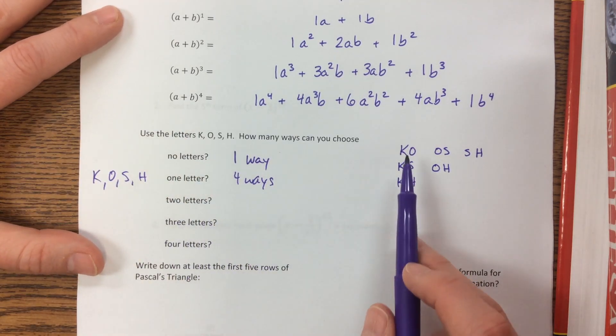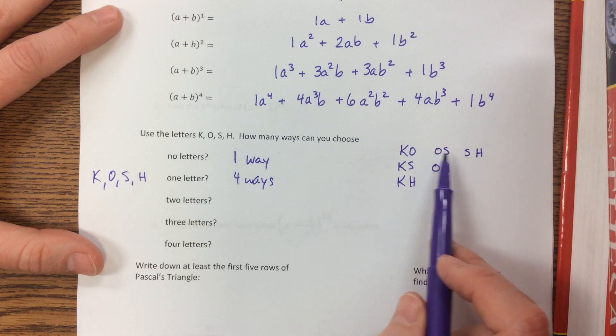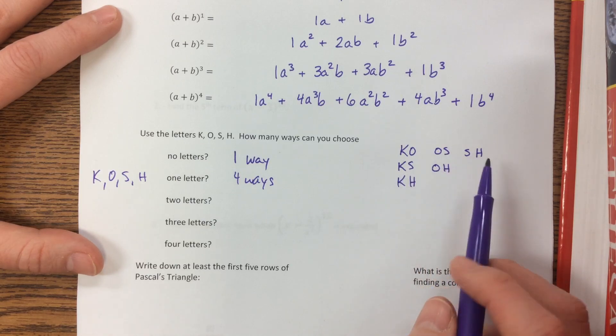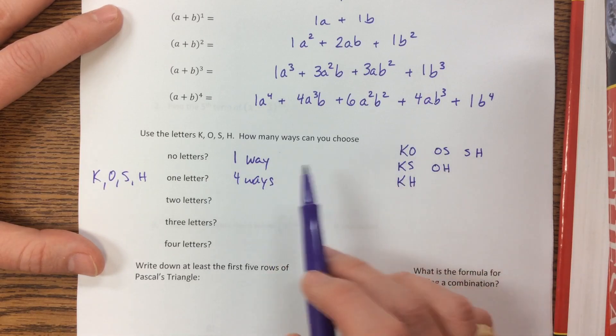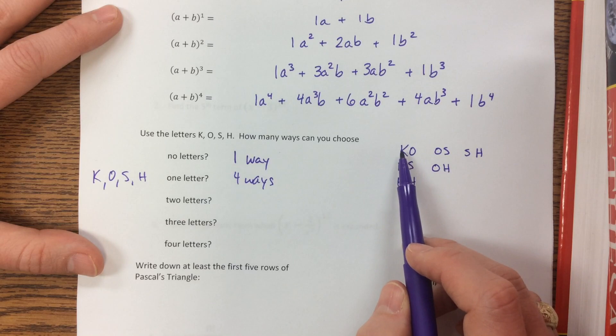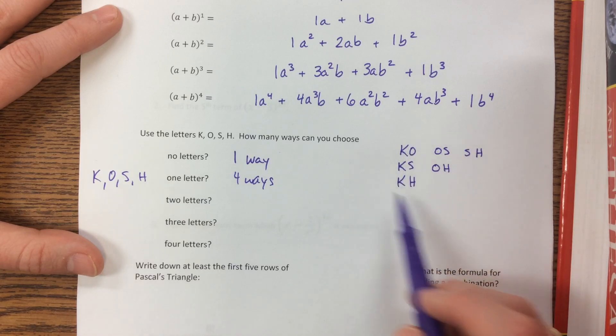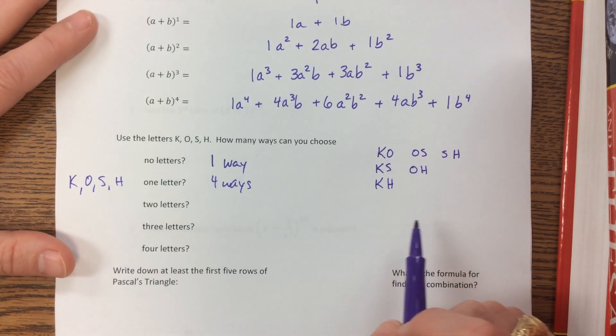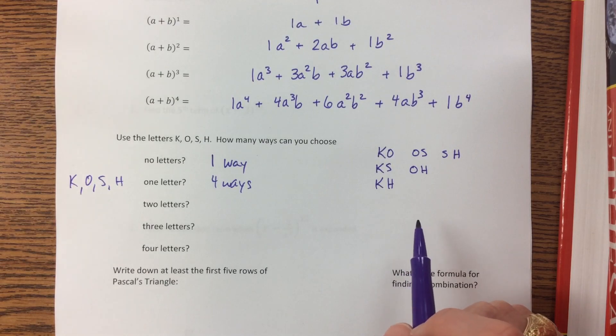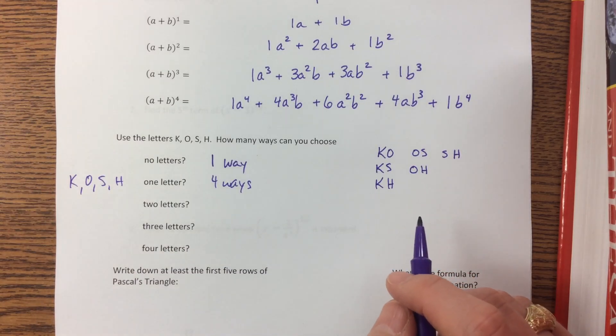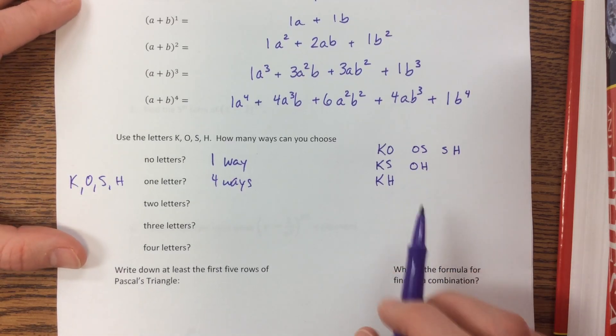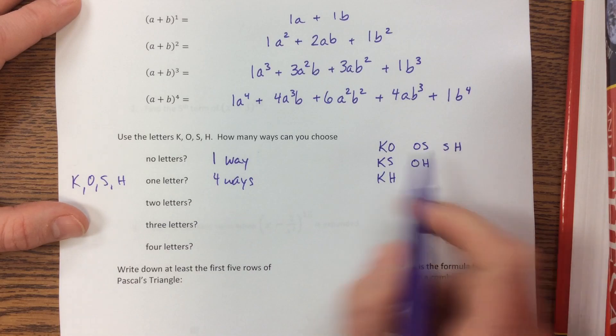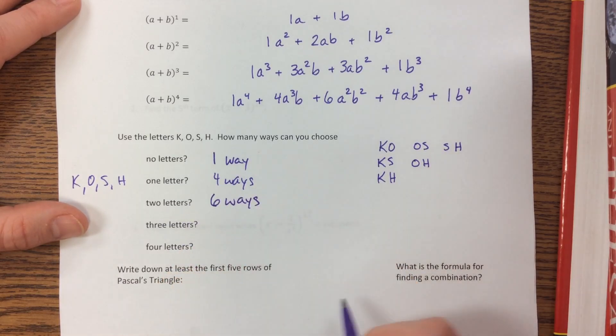Then the next one, two letters, I could either pick K-O, K-S, K-H, O-S, O-H, and then S-H. Notice they're saying how many ways can I choose that? It doesn't matter if I choose the K first, then the O, or the O first, then the K. So this is a combination. We're not looking at a permutation. This is like you get chosen for a committee and you don't care if you got chosen first or second. You just want to be on the committee. It's different than like a race where you get first or second place. That is a permutation. So there are one, two, three, four, five, six ways for us to pick two letters.